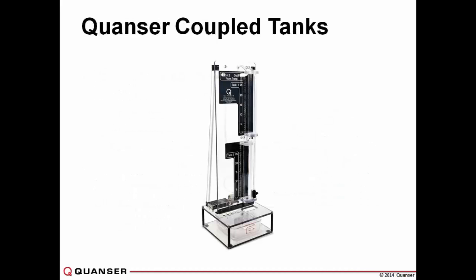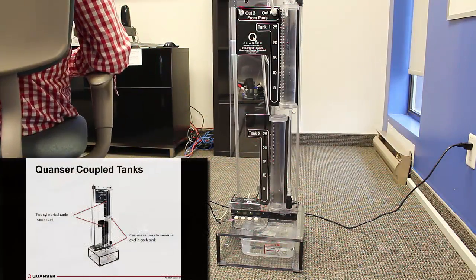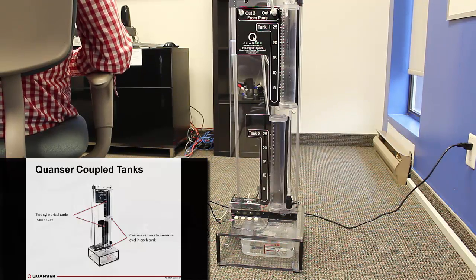Let's introduce the Quanser coupled tank system. I'll be showing you some stuff on the actual system that you see on your screen on the webcam, but also on the presentation because some stuff is easier to show on here. First of all, it's two tanks. We have two cylindrical tanks, they're the same size. Then we have two pressure sensors on the bottom of each tank. The pressure sensors are used to measure liquid level in each of these.